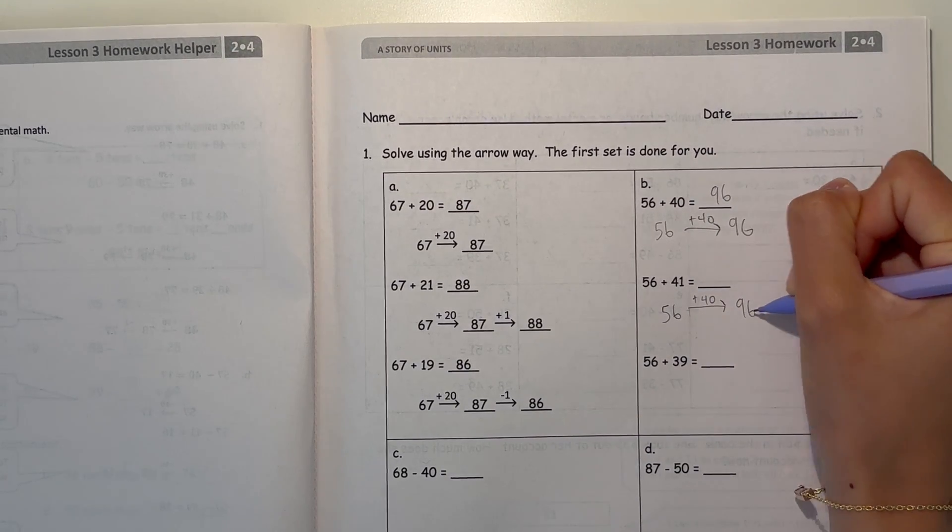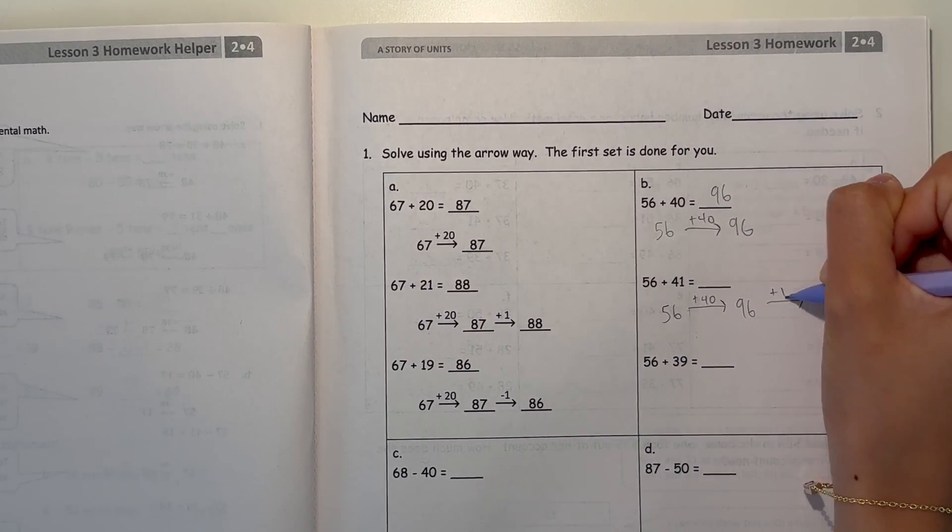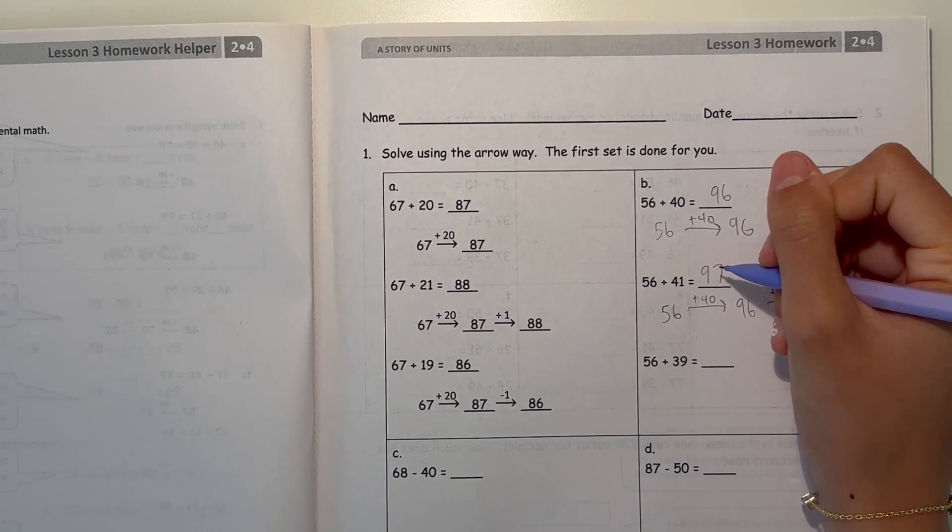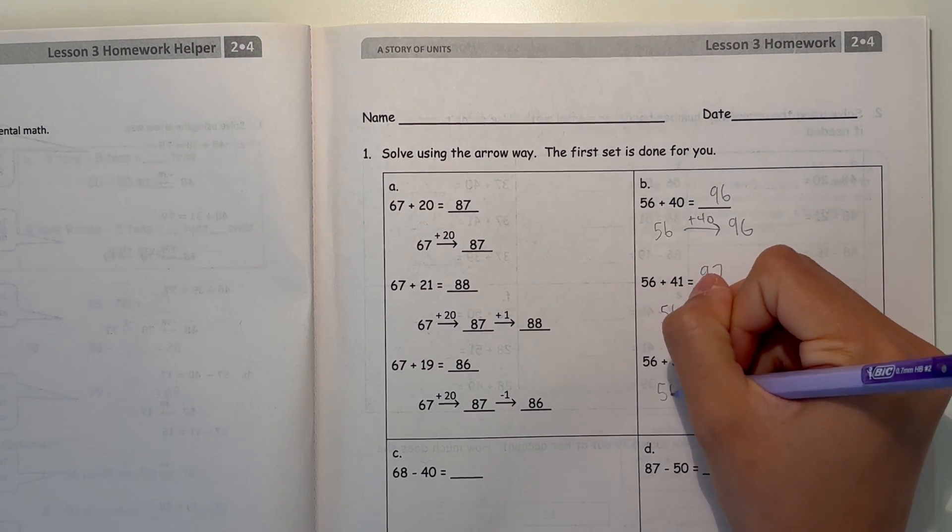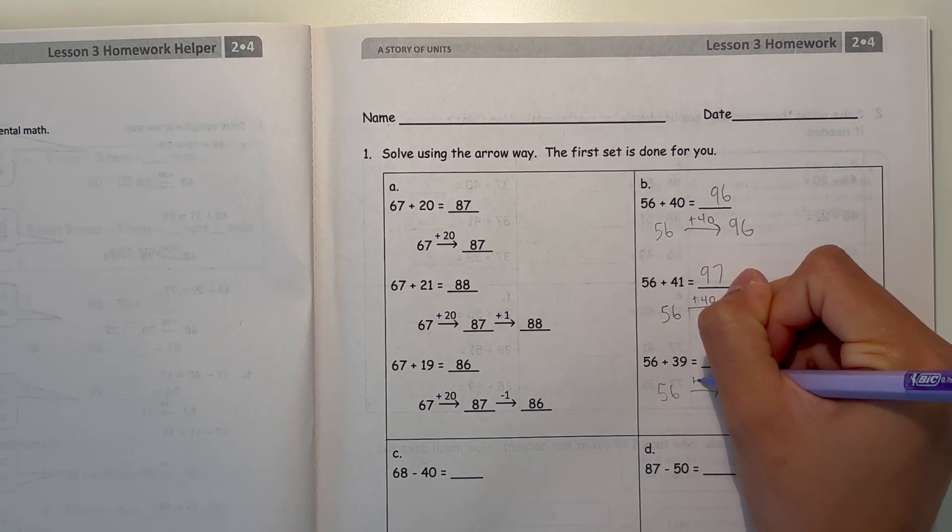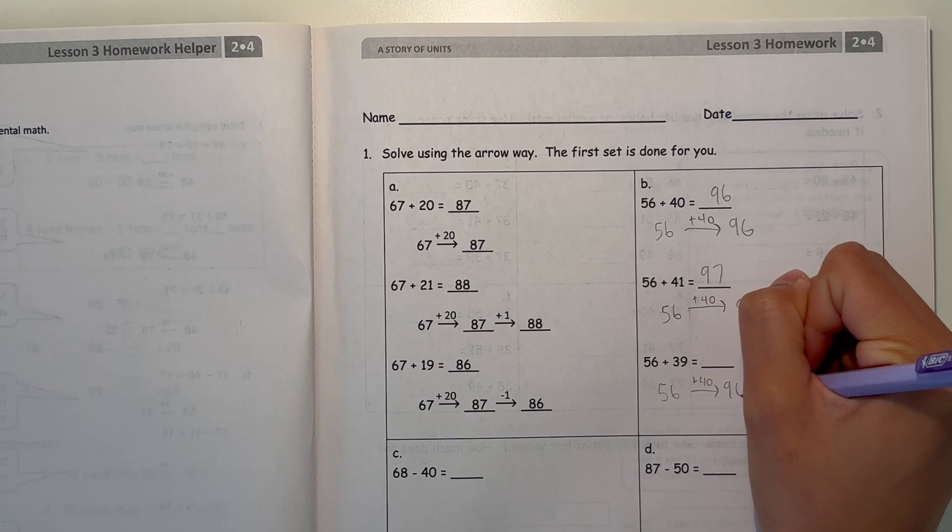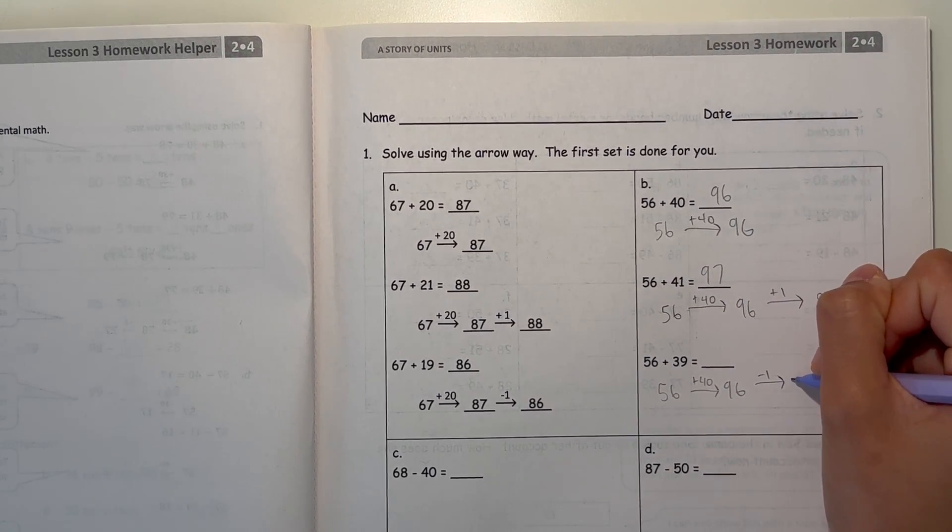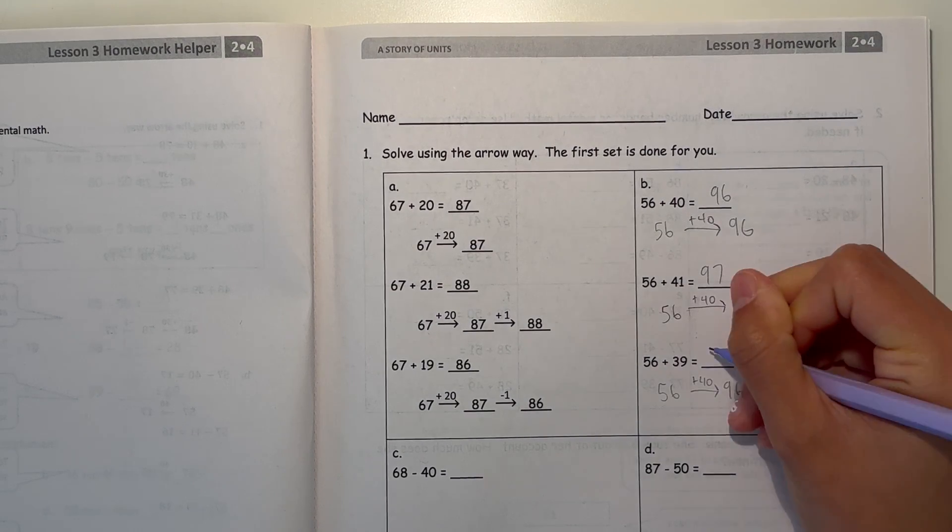And 56 plus 41, first plus 40, which is 96, and then add 1, which is 97. And now 56 plus 39, we're going to add 40 first, and then minus 1, because it's easy to do that, until you get 95.